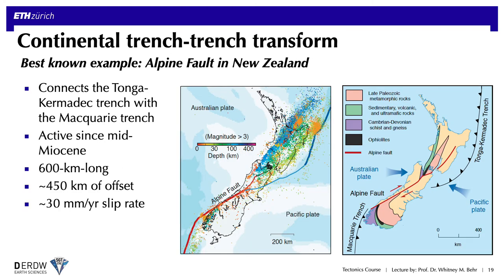The Alpine Fault is a nice example of a trench-trench transform, connecting the Tonga-Kermadec Trench with the Macquarie Trench. Active since the mid-Miocene, it is not as long as the San Andreas or Dead Sea transforms, but has a quite fast slip rate comparable to or perhaps larger than the San Andreas, at around 30 millimeters per year.